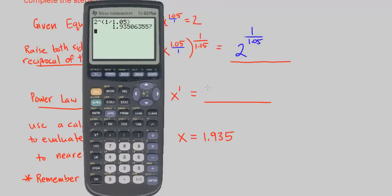And we get 2 to the power of 1 over 1.05 is equal to 1.935063557. Again, that's all the digits our calculator gives us.